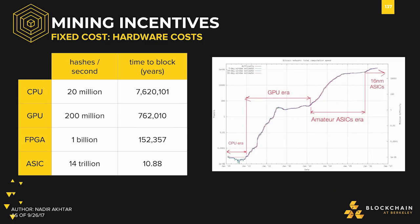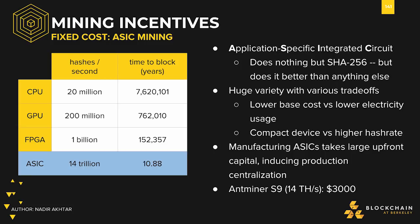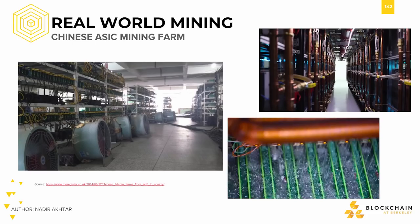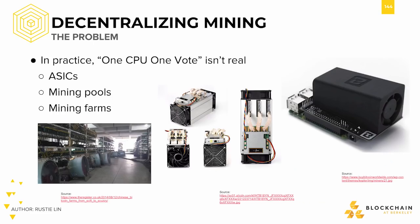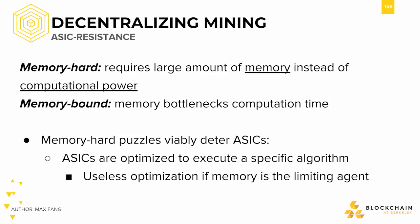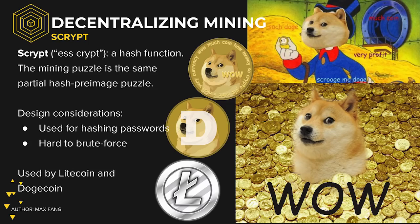We took a look at the various kinds of hardware used by miners, starting off with CPUs, then GPUs, FPGAs, and finally ASICs. We took a look at some examples of mining in real life, from Chinese ASIC mining farms to some examples of ASICs you could buy yourself. We also examined the problem of decentralizing mining, because in practice, one CPU one vote doesn't seem to hold today. We talked about the requirements of a puzzle to make it satisfactory for a cryptocurrency, and took a look at ASIC resistance and memory-hard puzzles which could possibly deter ASICs.